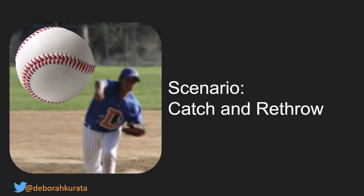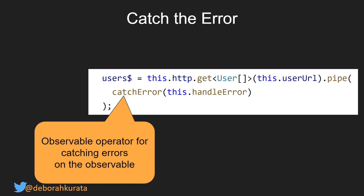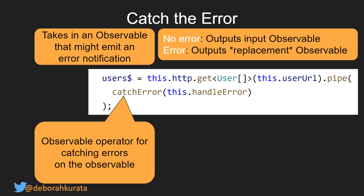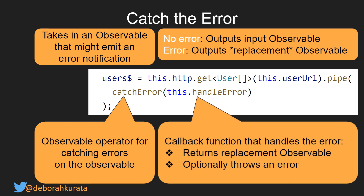Our first scenario is catch and re-throw. Here we catch the error using an observable operator for catching errors on the observable. It takes in an observable that might emit an error notification. If there is no error, it outputs the input observable — basically a no-op. If there is an error, it outputs a replacement observable. The callback function called here handles the error.